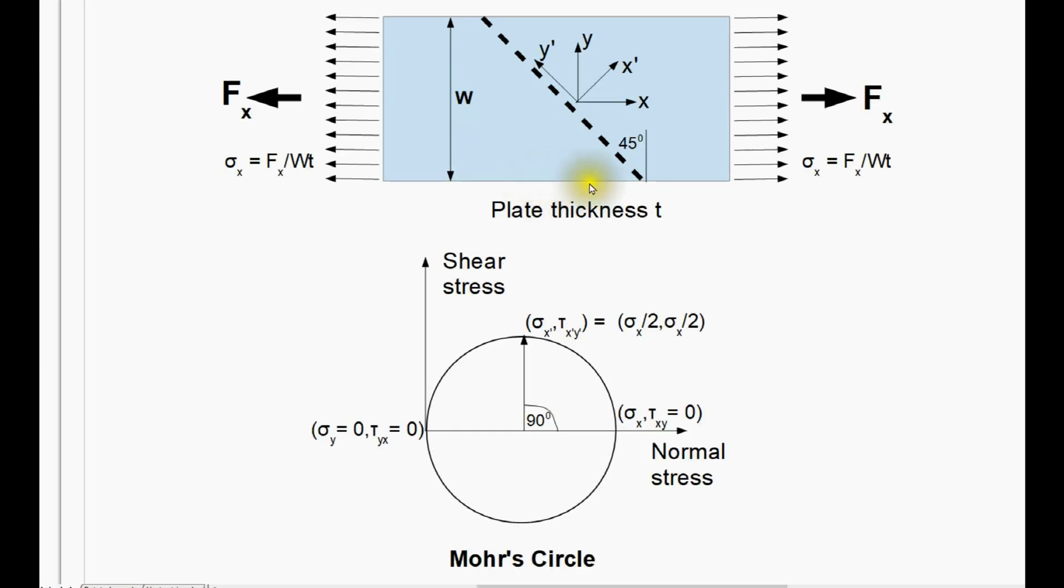We now need to examine what's happening on the plane of the weld, and I start off by drawing a local coordinate system, rotated by 45 degrees, X' and Y', and I've also plotted Mohr's circle for this state of stress.